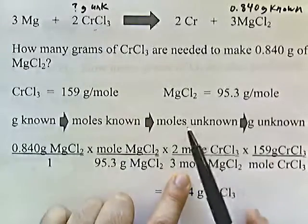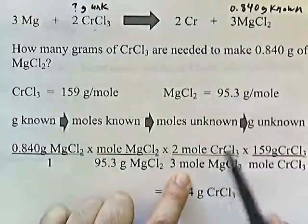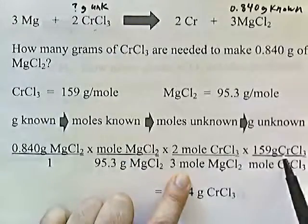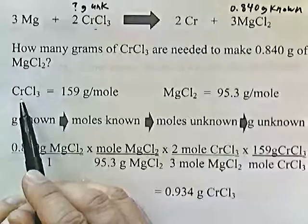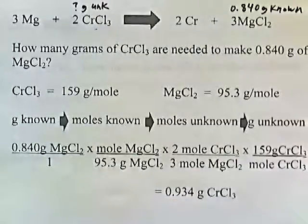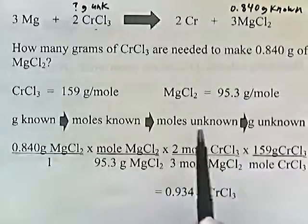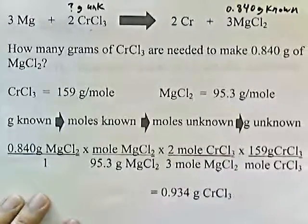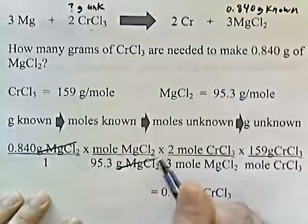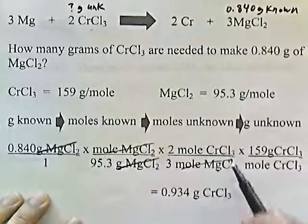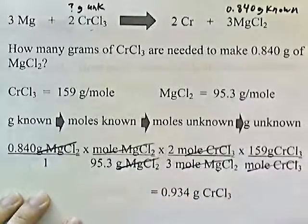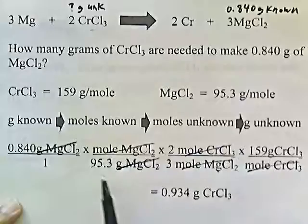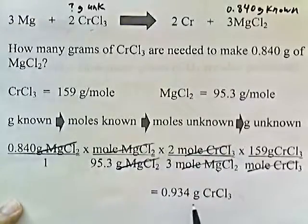Now from moles of unknown to grams of unknown: moles of chromium chloride on top, so I put moles of chromium chloride on the bottom and 159 grams of chromium chloride on top, because one mole of chromium chloride weighs 159 grams. Grams of magnesium chloride cancel, moles of magnesium chloride cancel, moles of chromium chloride cancel, and we're left with grams of chromium chloride. 0.84 times 2 times 159 divided by the bottom numbers gives 0.934 grams of chromium chloride.